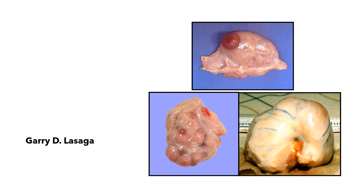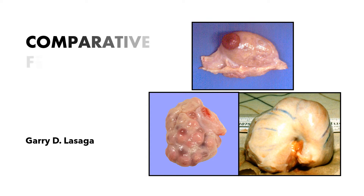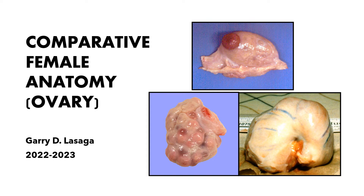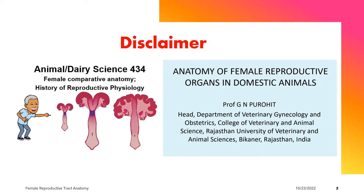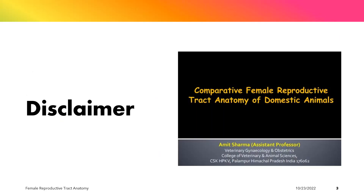Welcome to our presentation on the Comparative Female Anatomy. In this presentation, we are going to focus on the Comparative Anatomy of the Ovary. This presentation is adapted from the lecture of Dr. John Parrish on his History of Reproductive Physiology lecture, the anatomy of the female reproductive organs in domestic animals by Professor Porohit, and the Comparative Female Reproductive Tract Anatomy of Domestic Animals by Professor Amit Sharma.